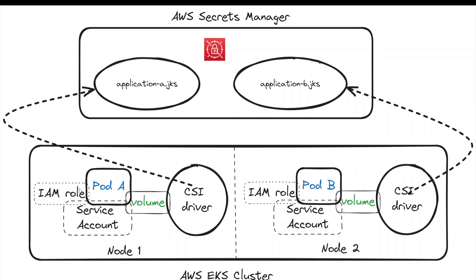Pod A has its own associated IAM role and service account. The IAM role associated with pod A needs to have access to retrieve the secret from AWS Secrets Manager, otherwise this will not work. In pod A's YAML definition, we'll be creating a volume which specifies the CSI driver with AWS provider, which in turn connects to AWS Secrets Manager, fetches the secrets, and makes them available as a volume. Pod A can then mount the volume using volume mounts.